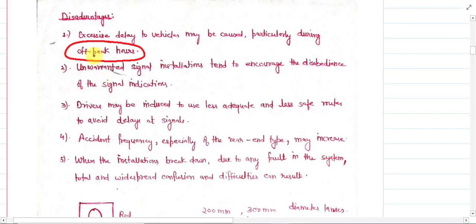The second disadvantage is that unwarranted signal installation tends to increase the disobedience of signal indications. If you install a signal without providing any proper warning, users will be encouraged to disobey the signal. The purpose of the signal is not fulfilled, so you cannot install signals that are not justified according to the rules.